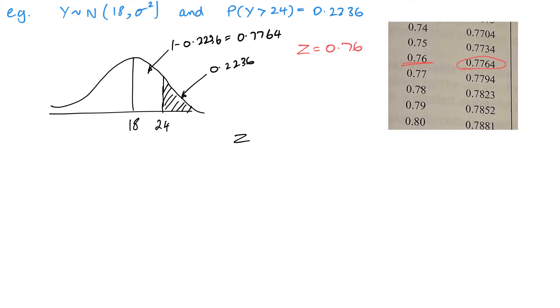So same formula again. Z equals X minus the mean over the standard deviation. So 0.76 is equal to 24 minus 18 over my standard deviation. So my standard deviation is 7.89 to 3 significant figures. Of course, if I want the variance, then I would just square that value, and I would get 62.3.